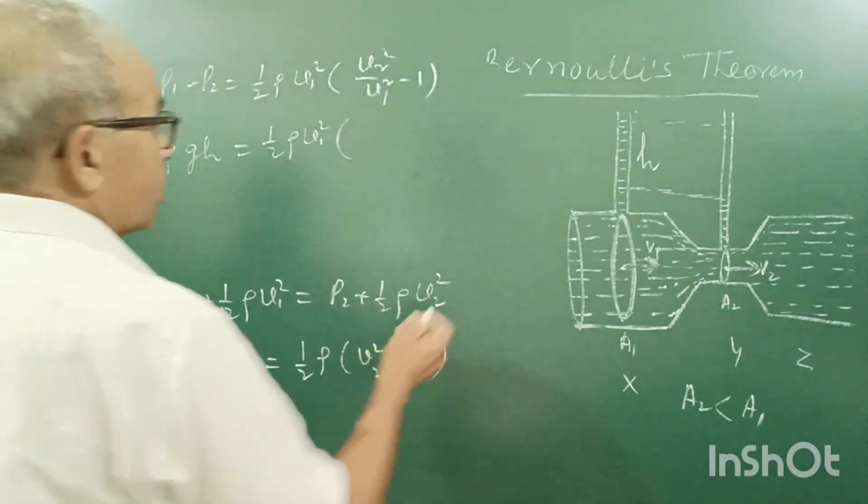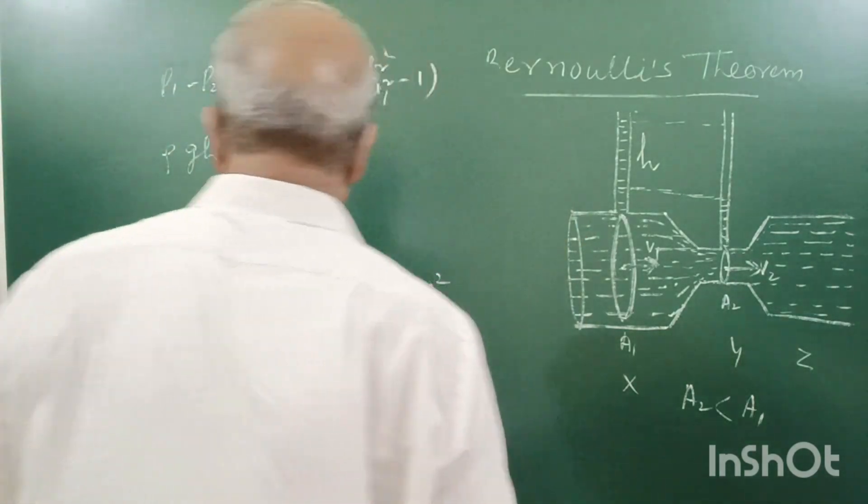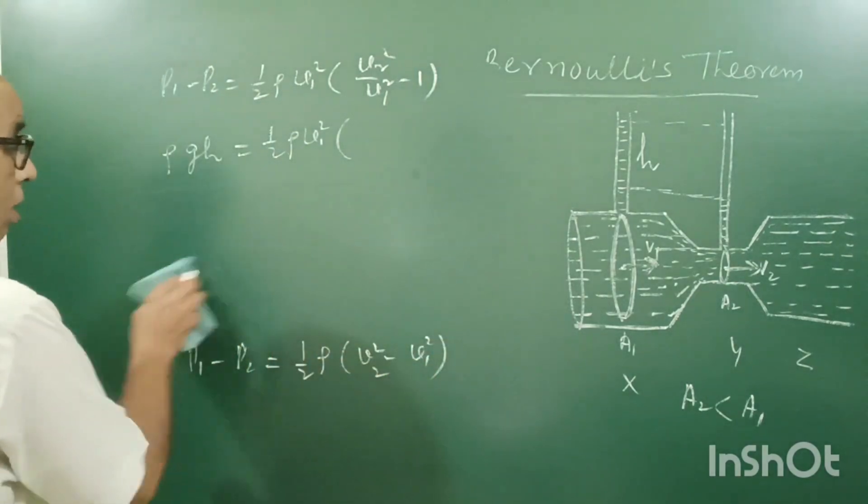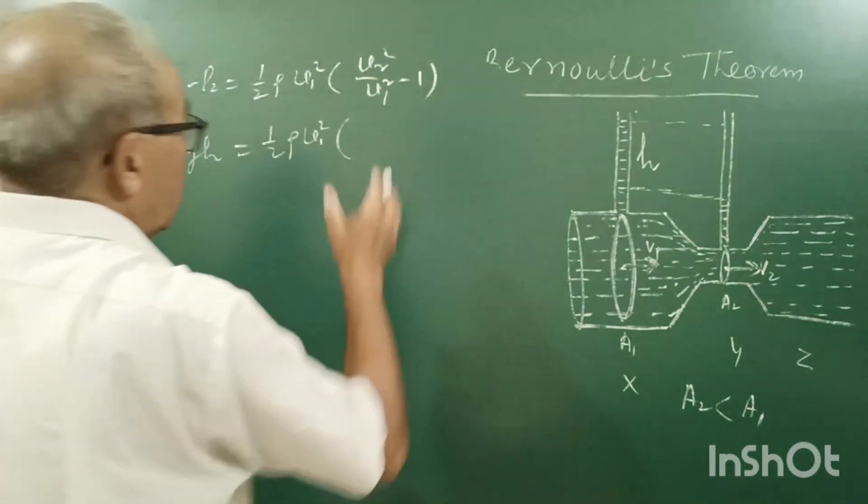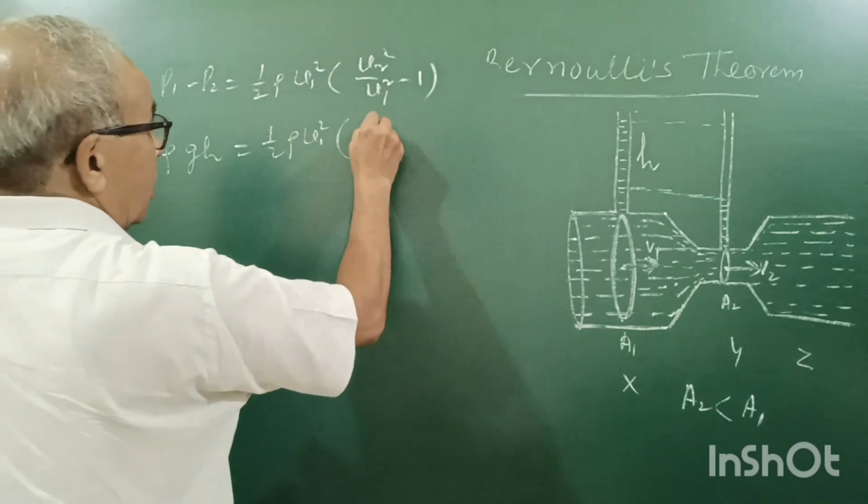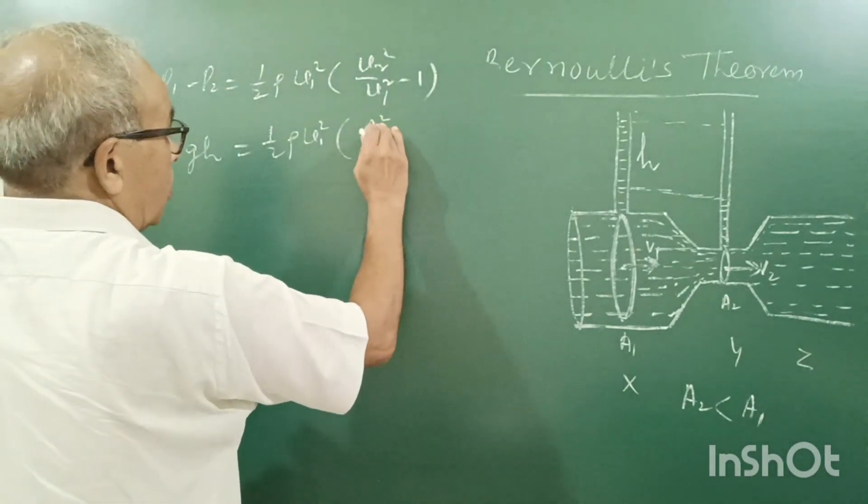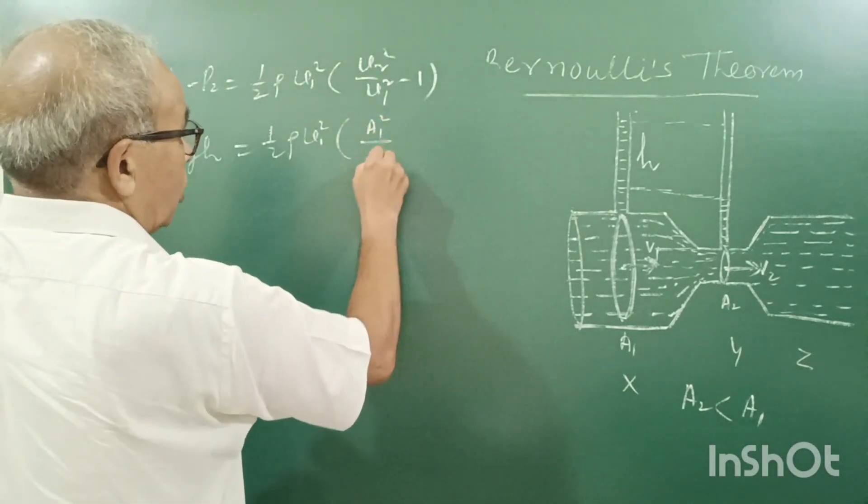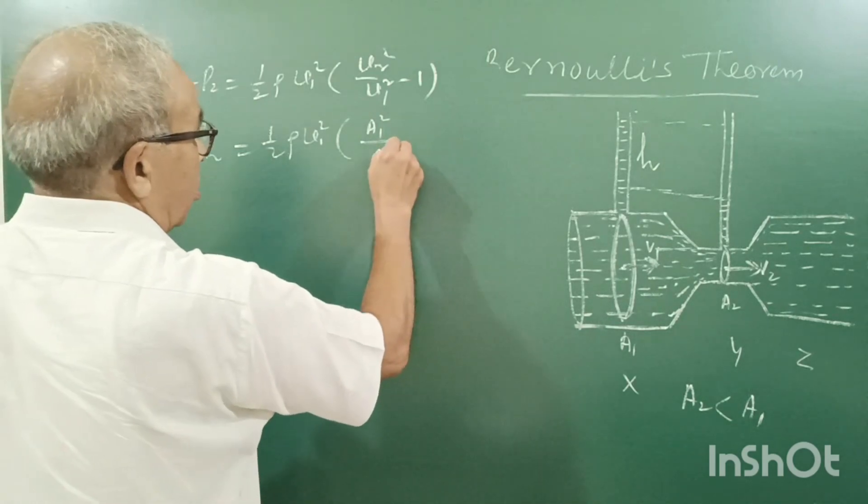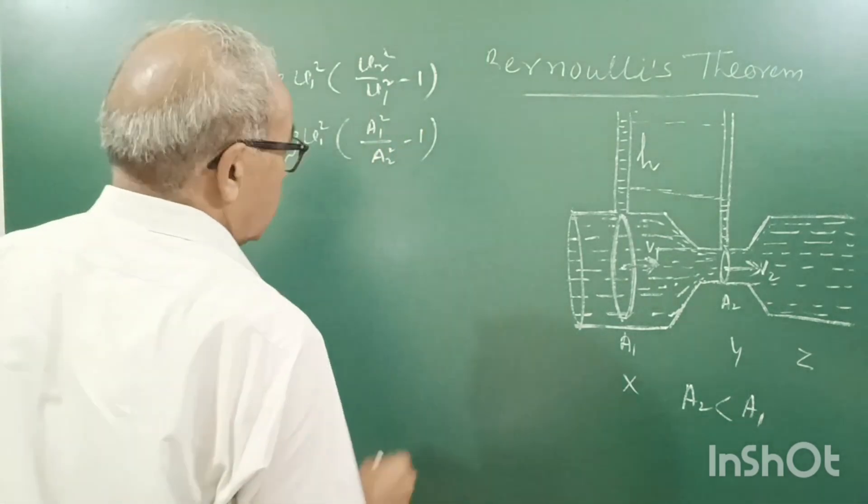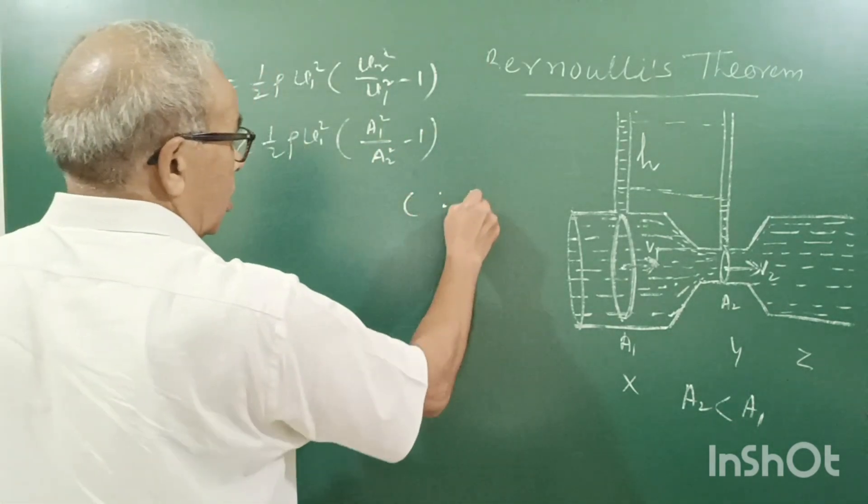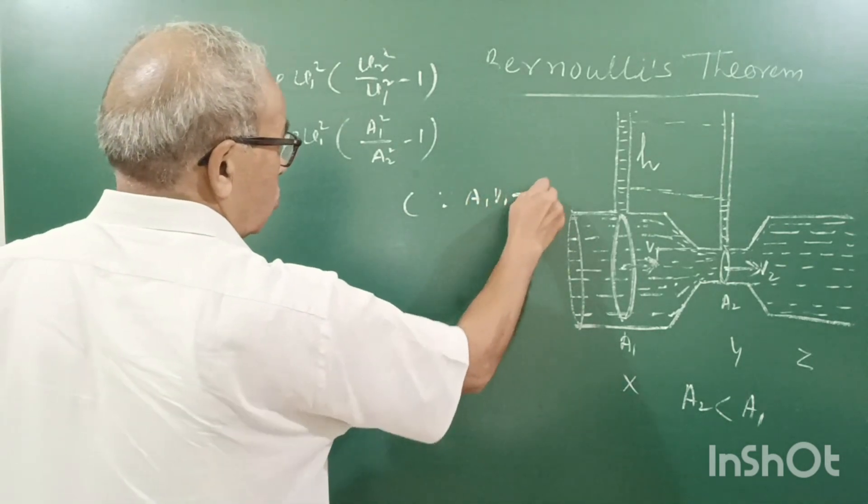So, again, we can write that from the continuity equation. A2 upon A1, it will become A1 square upon A2 square, minus 1. Since A1 V1 equal to A2 V2.